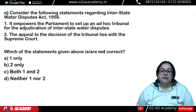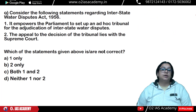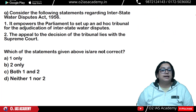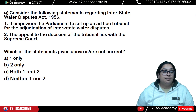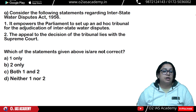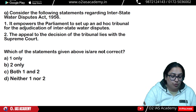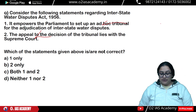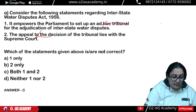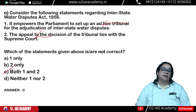Another question: Consider the following statements regarding the Interstate Water Disputes Act 1956. Statement 1: It empowers parliament to set up an ad hoc tribunal for adjudication of interstate water disputes. Statement 2: Appeal against the decision of the tribunal lies within the Supreme Court. Both statements are incorrect — it is the central government (not parliament) that sets up the tribunal, and the decision is final with no appeal to the Supreme Court.